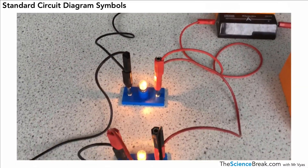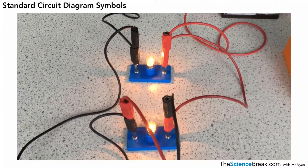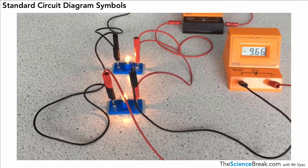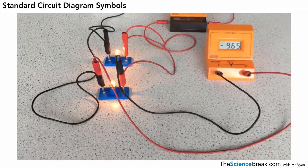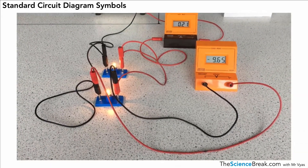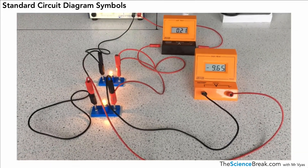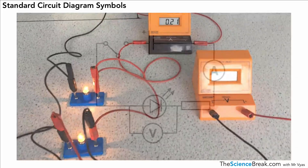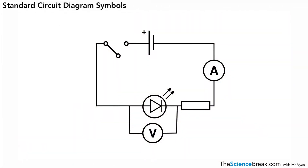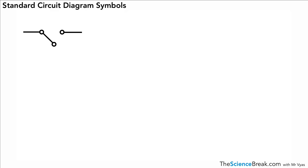Hello, today we're going to look at standard circuit diagram symbols. But before we do that, let's take a look at a real circuit — here we've got some different components that are all connected to a power pack. You can imagine that if we try to draw that in a diagram it might be quite complicated, unless we had circuit diagram symbols. There are six shown on this particular circuit as just an example, but we need to know about 15 of them.